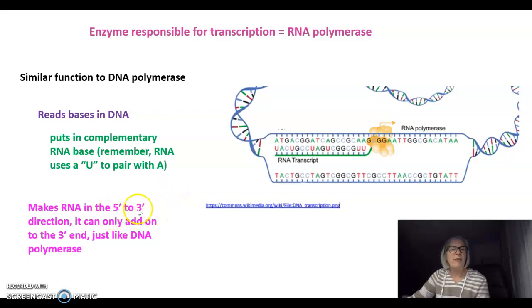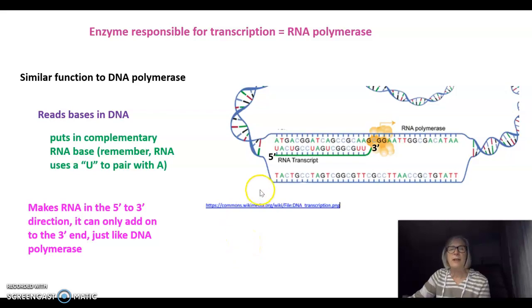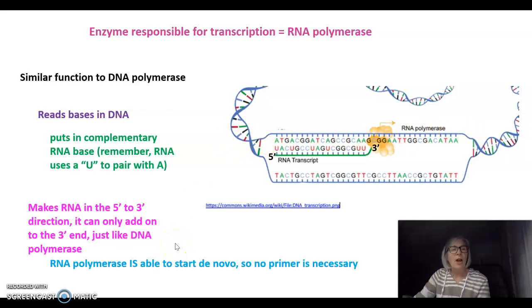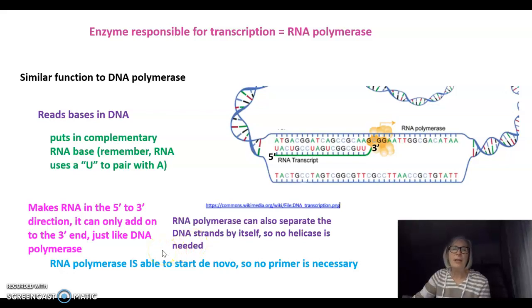RNA polymerase makes RNA in the five prime to three prime direction, and can only add to the three prime end, just like DNA polymerase. This RNA transcript is also made in an anti-parallel direction from the DNA. RNA polymerase is able to start de novo — it can start from scratch, so no primer is necessary. It can also separate the DNA strands by itself, so no helicase is needed.